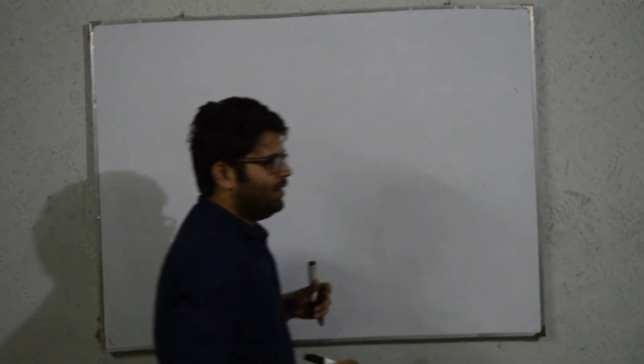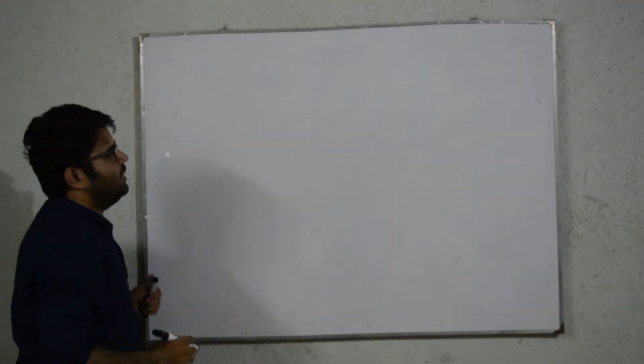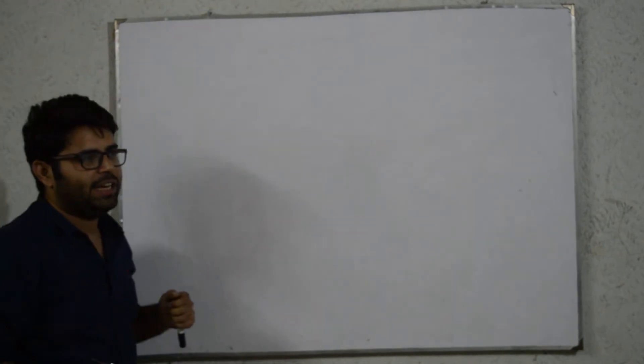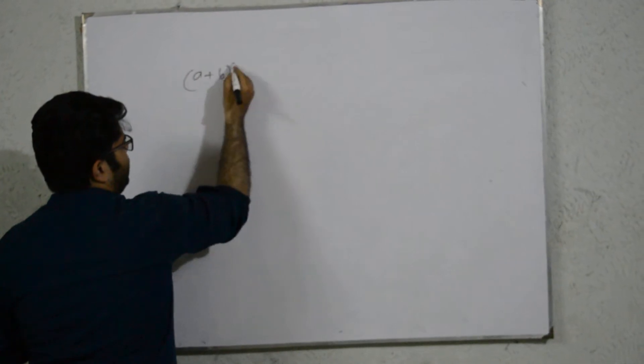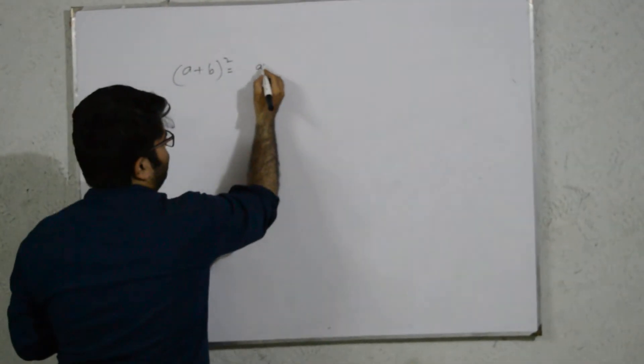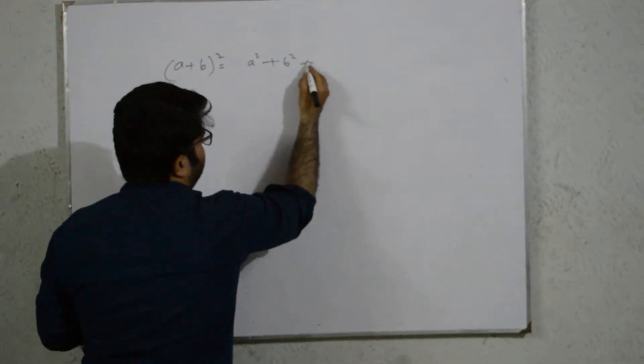In this class, we have a graphical representation of how the formulas are. I am going to tell you that this is a plus b whole square formula, which we discussed earlier: a squared plus b squared plus 2ab.